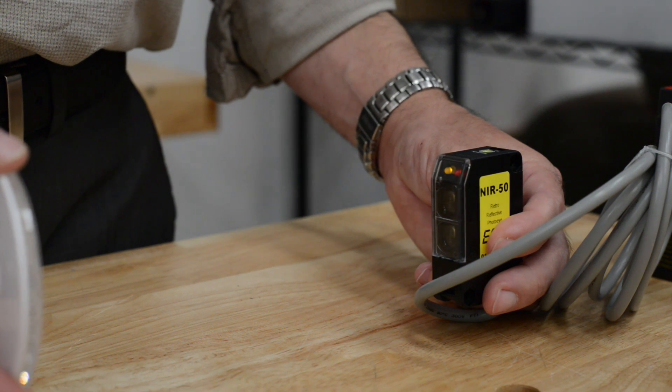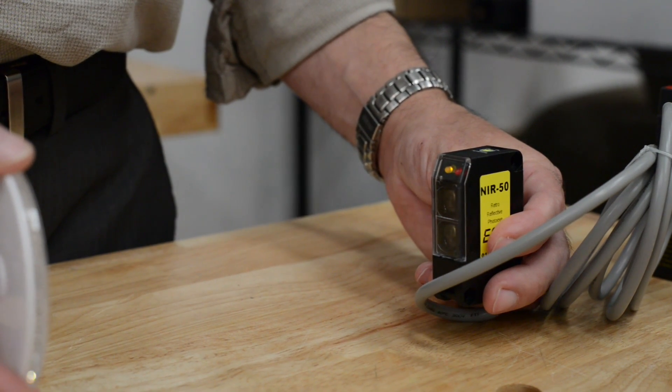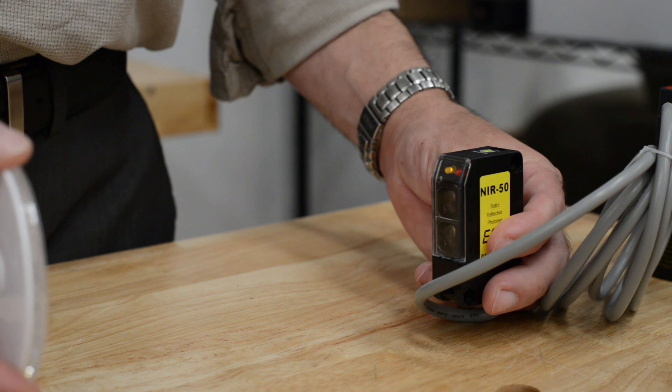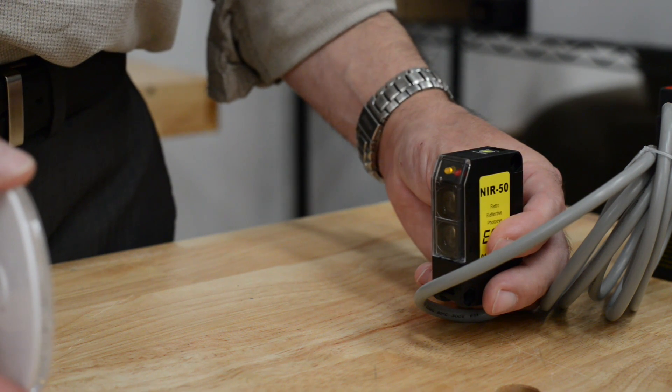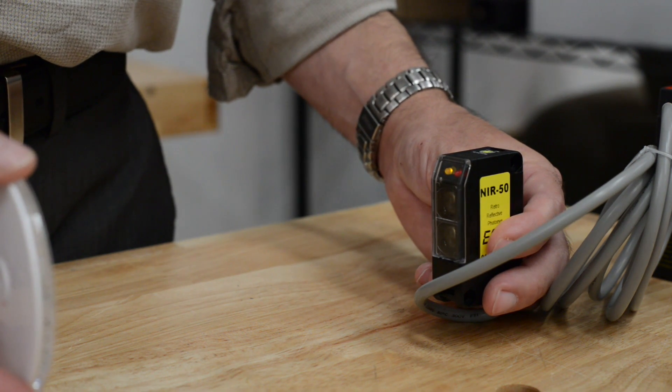This is a demonstration of the alignment of the EMX NIR50. Note right now it is aligned with the reflector and both the yellow and the red light is on.